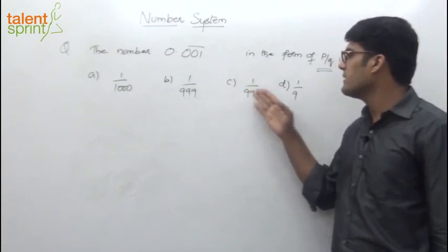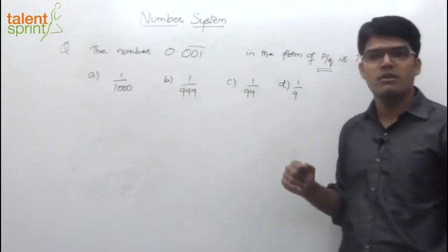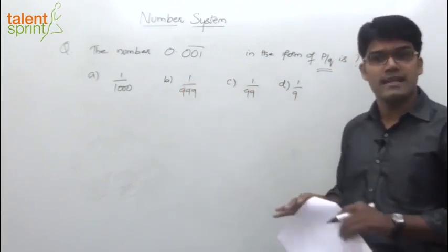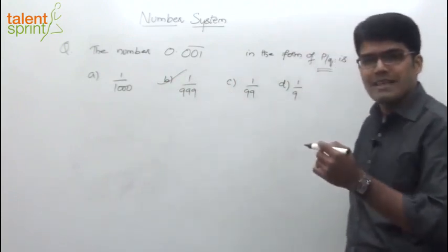So the 1st, 3rd, and 4th options are ruled out. What is left is option B: 1 by 999. That has to be the answer. That is one way of doing it — go away from the answer options.